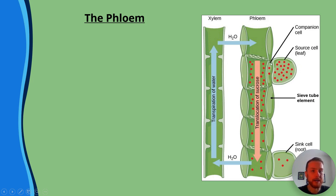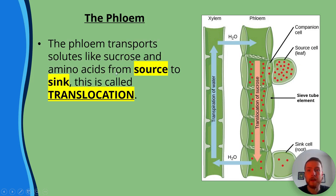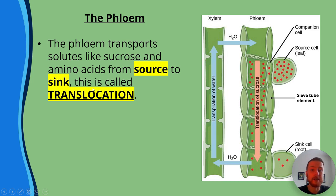We've also got the companion cells and the source cell, such as a palisade cell in the leaf. The phloem transports solutes like sucrose and amino acids from source to sink — this is called translocation.